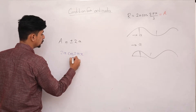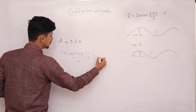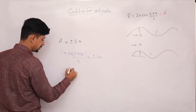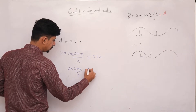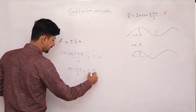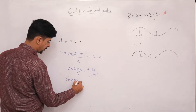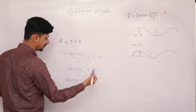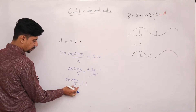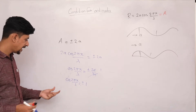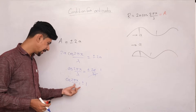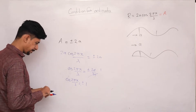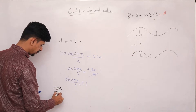So what I have is 2a cos(2πx/λ) = ±2a. Dividing both sides by 2a, we get cos(2πx/λ) = ±1. So this angle should be such that cos of that angle equals plus or minus 1. This angle is 2πx/λ.